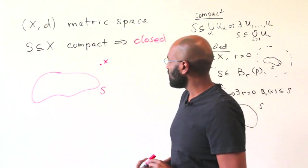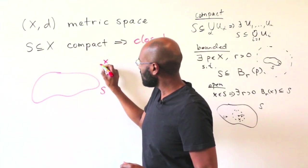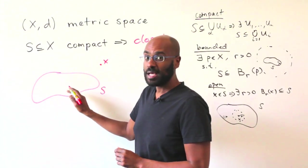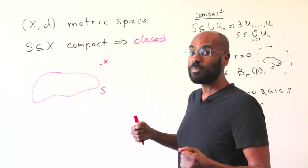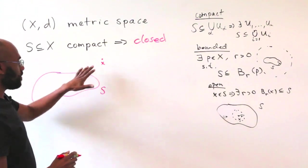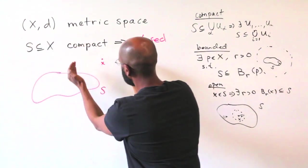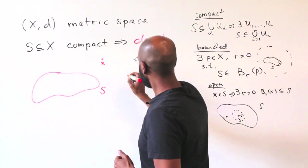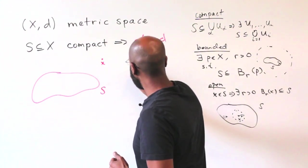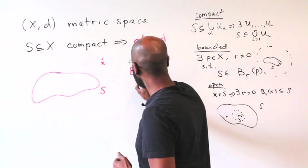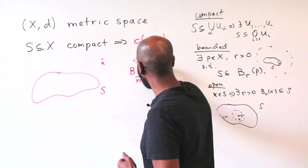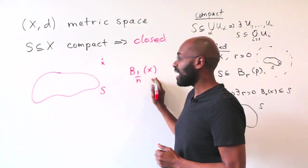So our strategy is to think about the fact that this point is separated from S and actually quantify how separated it is. So what we're going to do is separate this point X from S by constructing different balls of different radii. A way to do that is, for every counting number N, we'll take the ball of radius 1 over N centered at X.